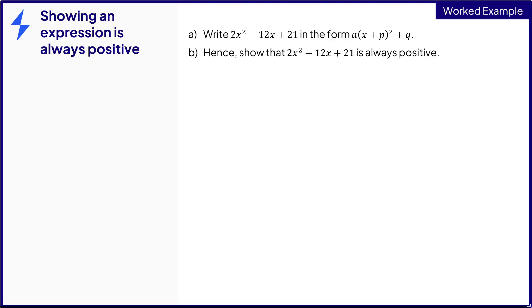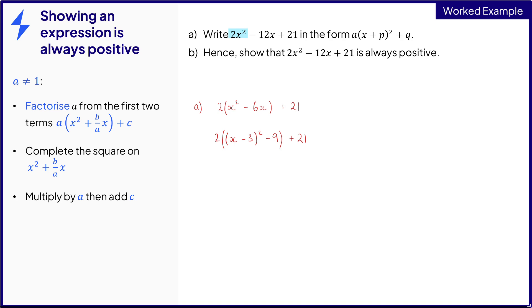Let's have a go at a worked example. Pause it and try it for yourself first. In part a we're asked to complete the square and we can see that there's a coefficient in front of x squared so we follow the steps for when a is not equal to 1. So factorize out the 2 from the first two terms. Complete the square on the bit inside the bracket. Multiply by the 2 and then add the 21. So now we know straight away that a is 2 and p is negative 3 and we can just expand and simplify to get what q is which is just positive 3.